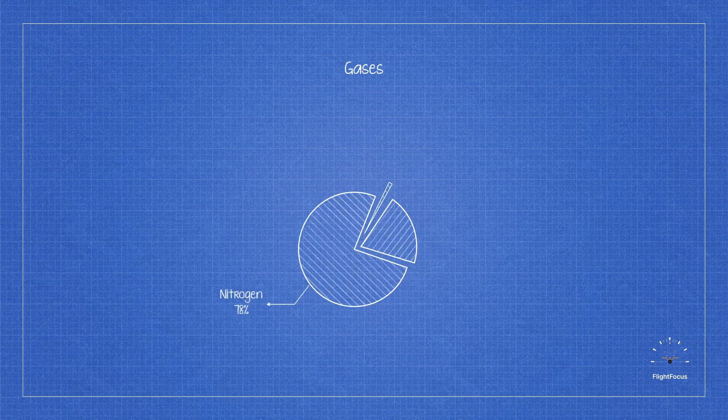With 78% of the atmosphere being nitrogen, 21% is oxygen, and the remaining 1% is made up of other gases like argon and carbon dioxide.